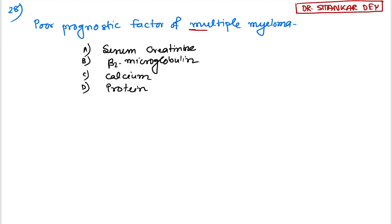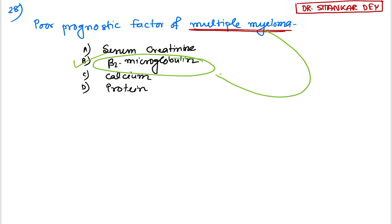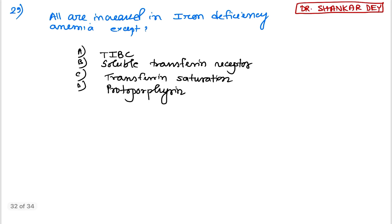Question 28: the poor prognostic factor for multiple myeloma — beta-2 microglobulin is considered one of the most important poor prognostic factors of multiple myeloma. If it rises, it denotes poor prognosis.